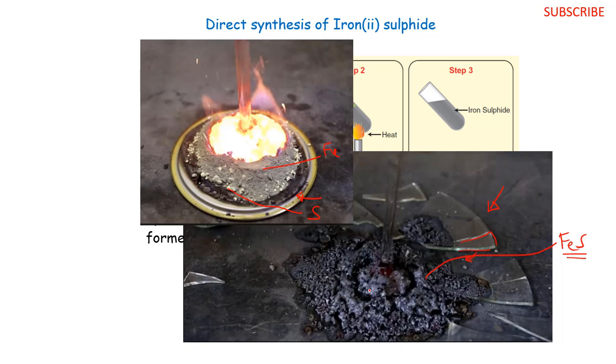So iron sulfide is black in color. You should be knowing the different colors of the components we have used. We said our iron filings were actually gray in color. We talked about our sulfur, this one being yellow in color, and we have now talked about our iron sulfide being black in color. Usually, these colors are necessary because sometimes you may be asked to describe what may be observed in a theory paper. So that's all, maybe plus our heat being evolved because it is highly exothermic.